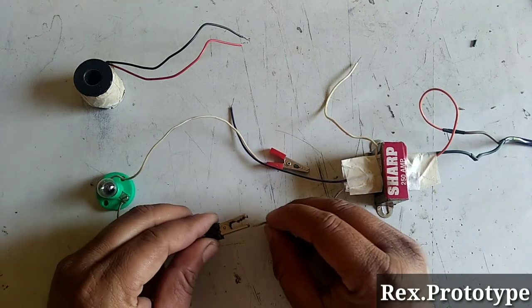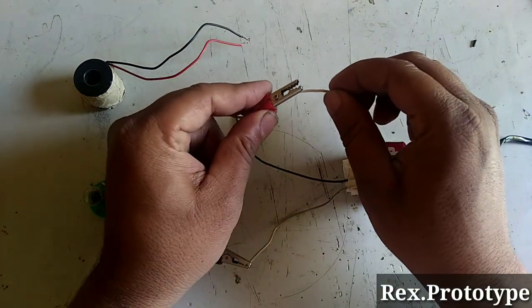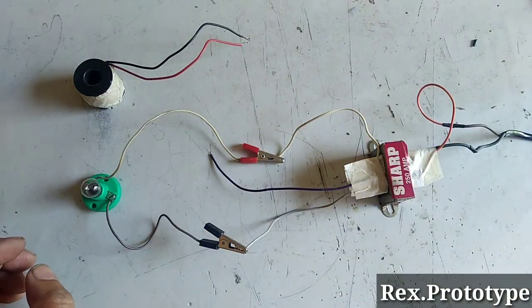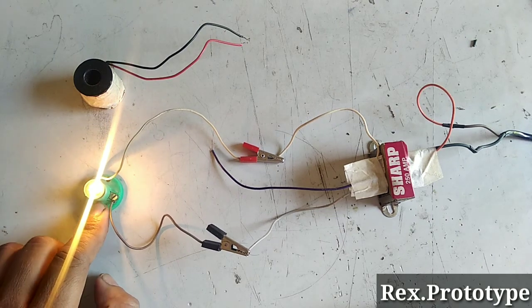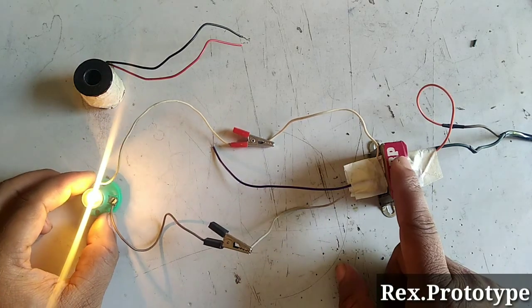First of all, we will see the brightness of the bulb. The bulb is much brighter when it is directly connected to the transformer.